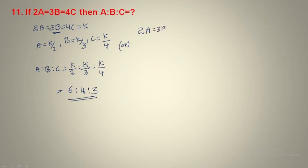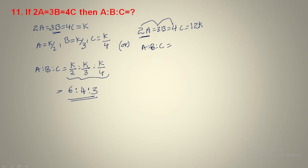Let us verify question 11 using LCM directly: 2a = 3b = 4c. LCM of 2, 3, 4 is 12. So consider this equals 12k. Then 2a = 12k means a = 6k. 3b = 12k means b = 4k. 4c = 12k means c = 3k. Final answer: a:b:c = 6 is to 4 is to 3.